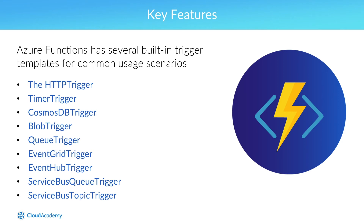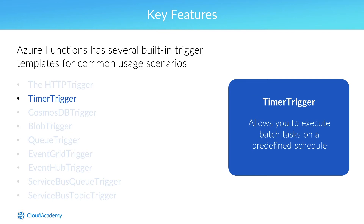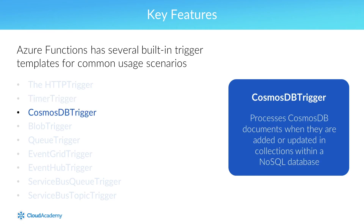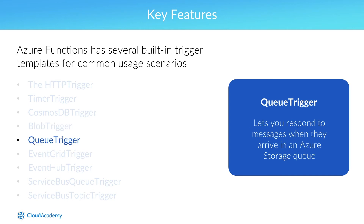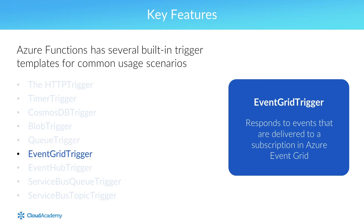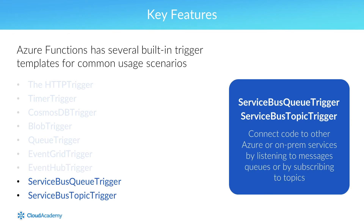Such trigger templates include the HTTP trigger, which allows you to trigger execution of your code via an HTTP request, while the timer trigger allows you to execute batch tasks on a predefined schedule. The Cosmos DB trigger processes Cosmos DB documents when they are added or updated in collections within a NoSQL database. Blob trigger allows you to process Azure storage blobs when added to containers, while queue trigger allows you to respond to messages arriving in an Azure storage queue. The Event Grid trigger responds to events delivered to a subscription in an Azure Event Grid, and the Event Hub trigger does the same for events delivered to an Azure Event Hub. The Service Bus Queue and Service Bus Topic triggers connect code to other Azure or on-prem services by listening to message queues or subscribing to topics.